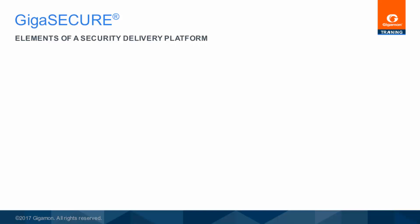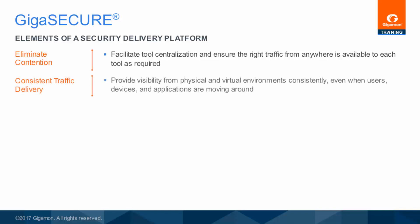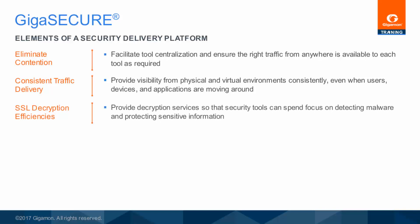Key features of a security delivery platform include: elimination of the need to identify and discreetly instrument static choke points within the network, especially in today's dynamic environments characterized by user, device, and application mobility. Deliver consistent traffic visibility from physical and virtual environments, even when users, devices, and applications are moving around. Provide a solution to decrypt communications so that security tools can detect malware that leverages encrypted communication channels, while at the same time ensuring that sensitive information is not compromised.